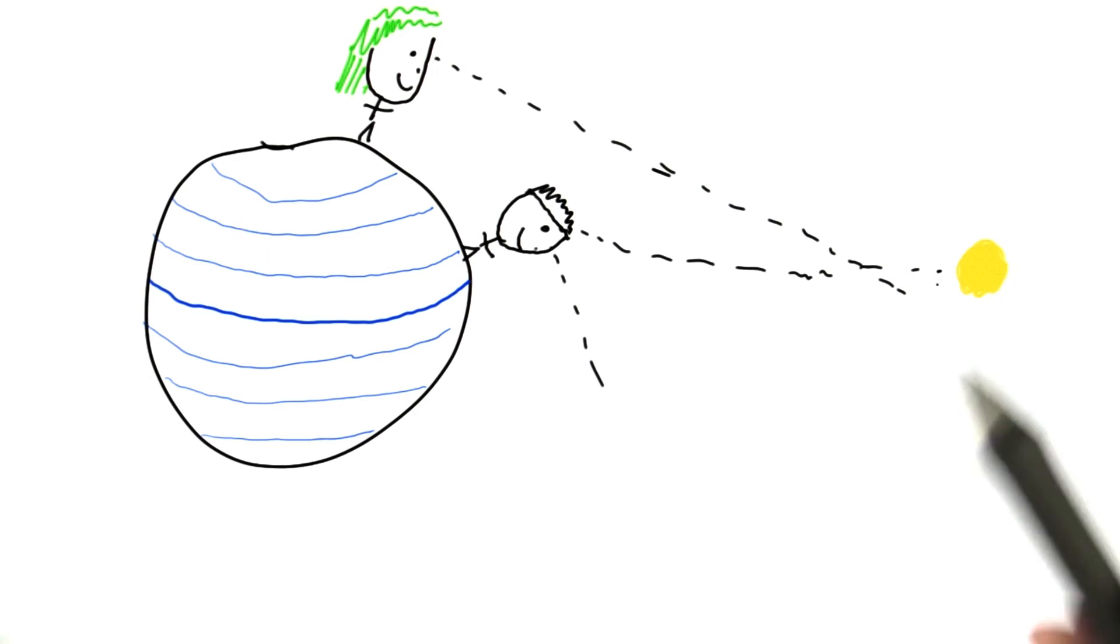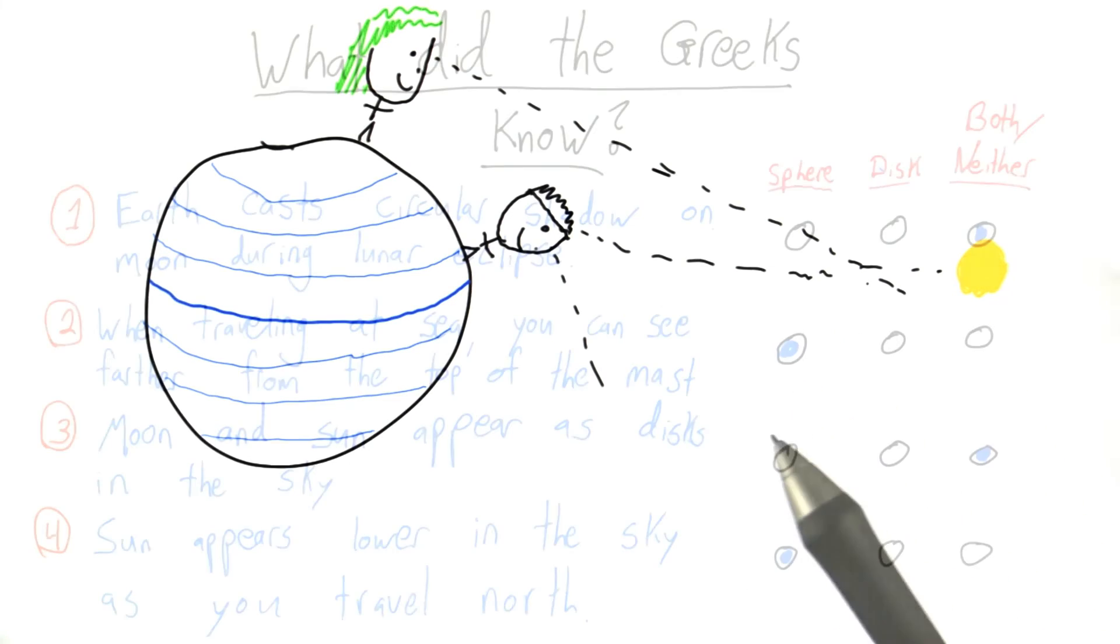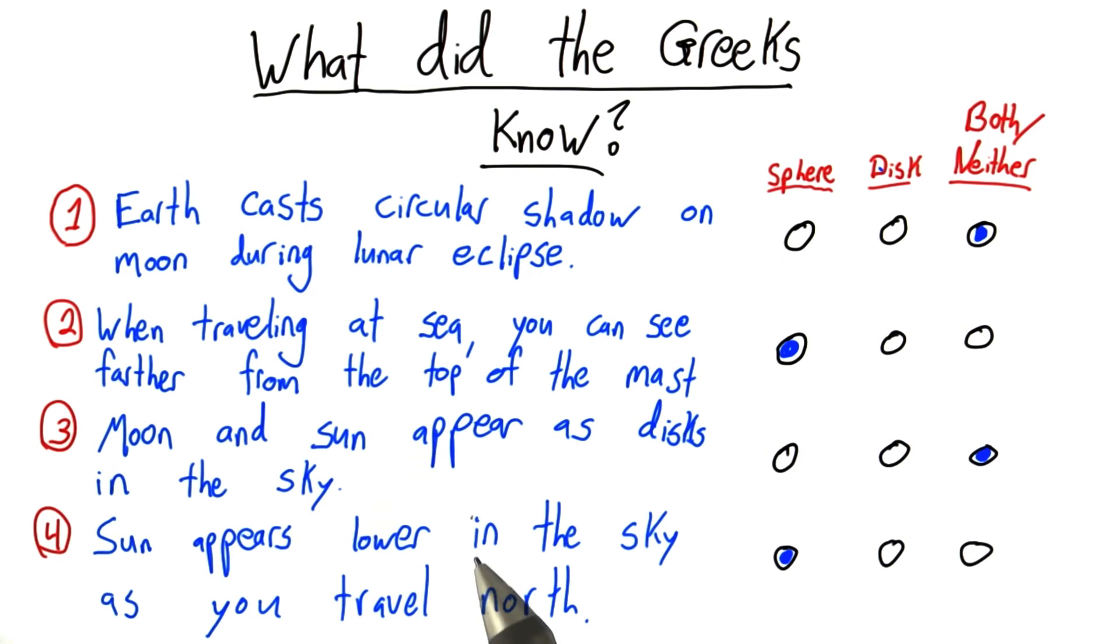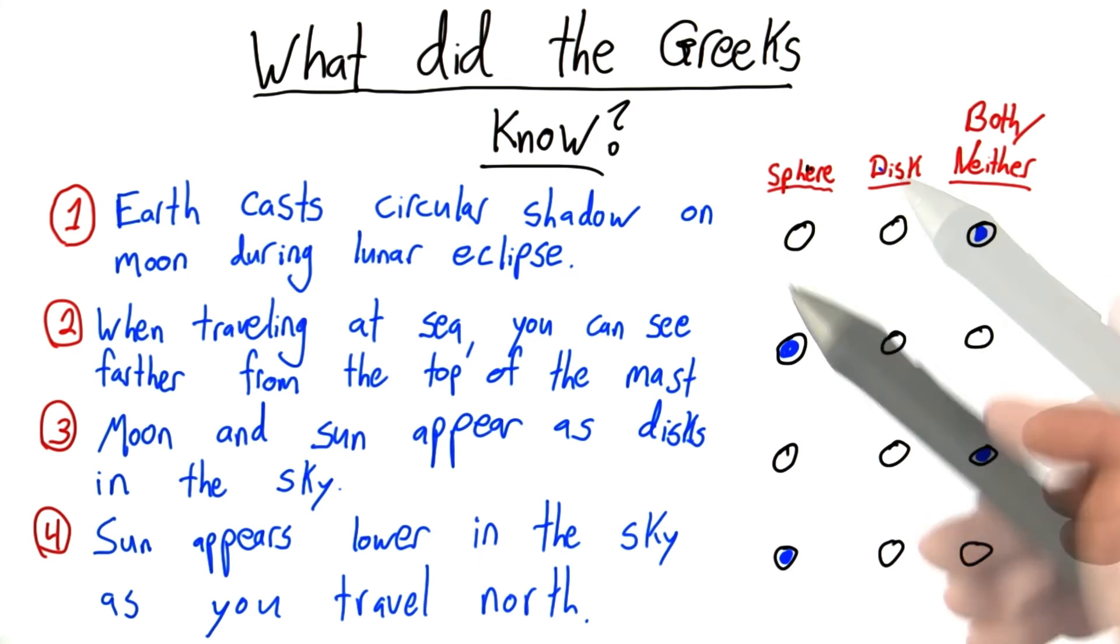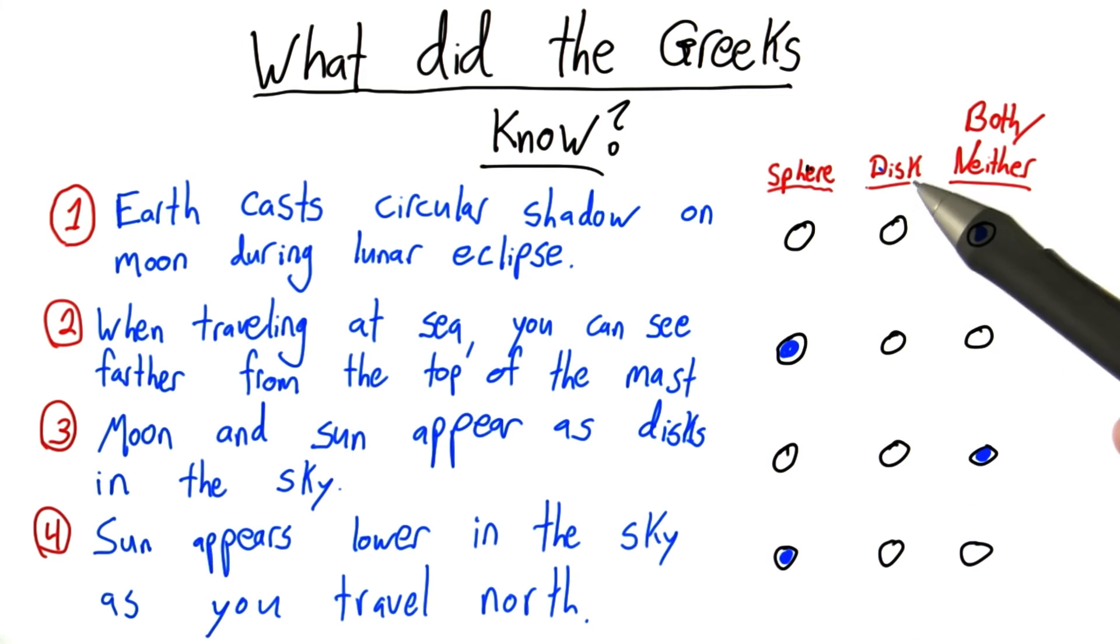This also points towards the spherical Earth. You wouldn't see any effect like this on a flat Earth. From the data we had, or from the data the Greeks had, some of it doesn't support either claim, the spherical or the disk hypothesis. But two of these points really seem to point towards the spherical Earth. None point towards a disk-shaped Earth, which means we can say with certainty, or some certainty, that even with the knowledge the Greeks had, we can know that the Earth is a sphere.